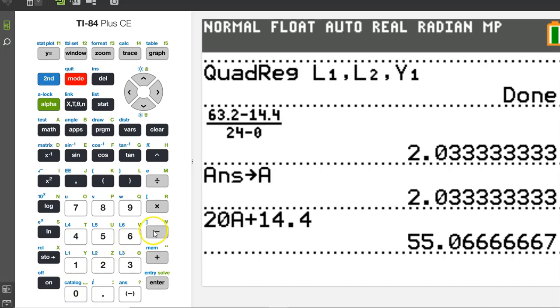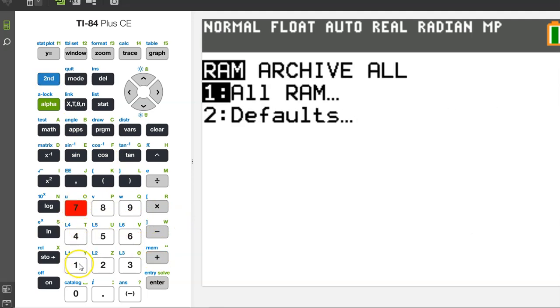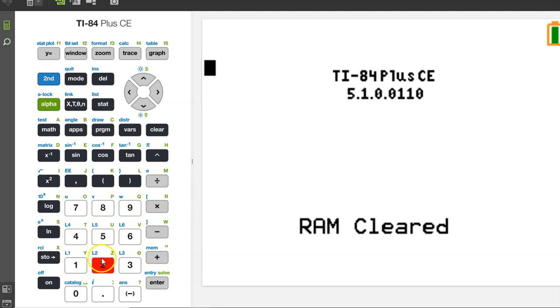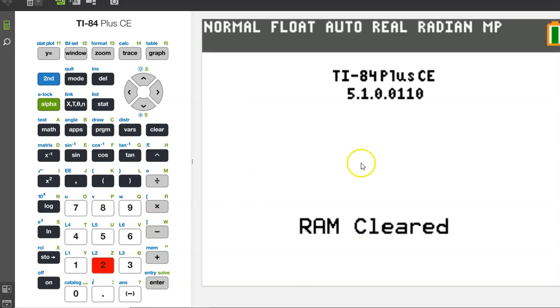Reset your calculator by hitting 2nd plus 7, 1, 2. That's 2nd plus 7, 1, 2. Now we are all starting off fresh.